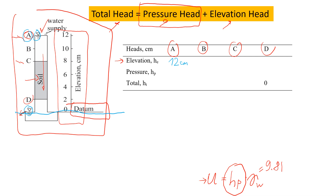Now let's look at the pressure head of point A. Pressure head shows how much water is above point A. You can see there is no water above point A — it's right on the surface — so the pressure head is zero. The total head is the sum of elevation head and pressure head: 12 plus zero gives you 12 centimeters.